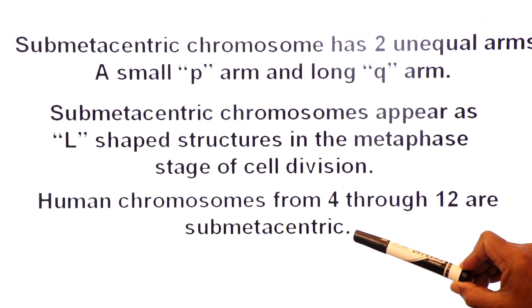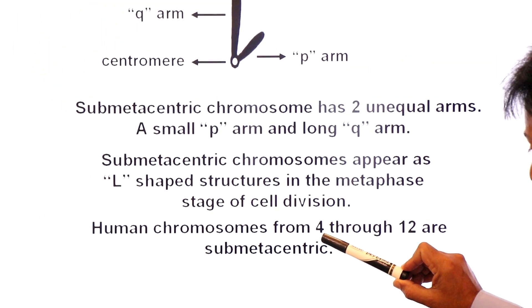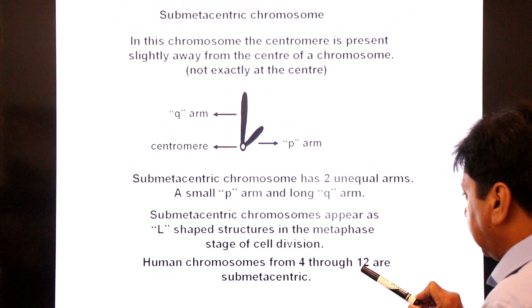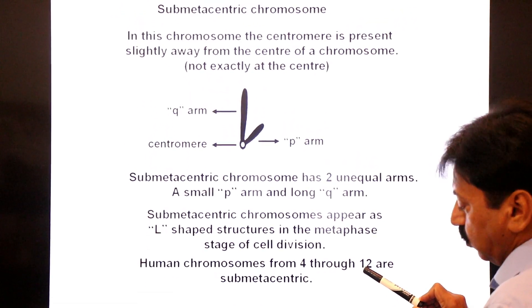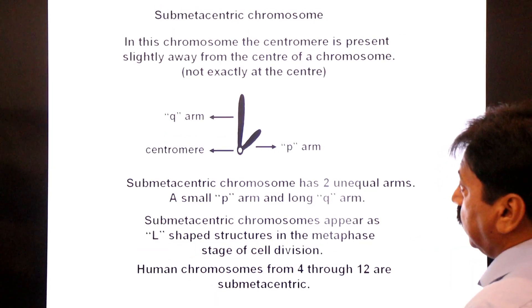From the 46 human chromosomes, chromosome numbers 4 through 12 are classified as submetacentric chromosomes.